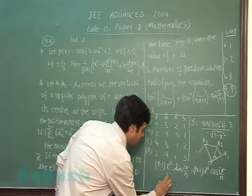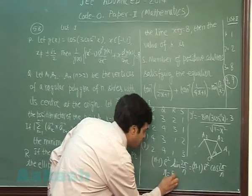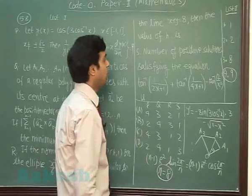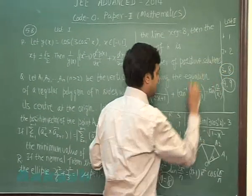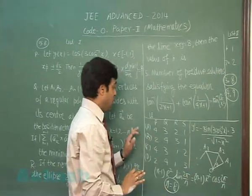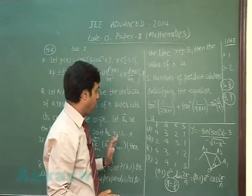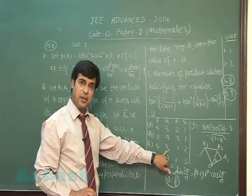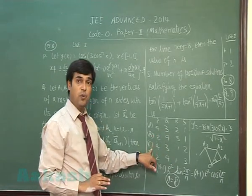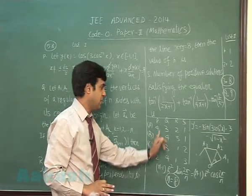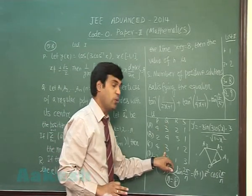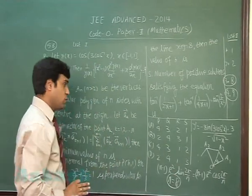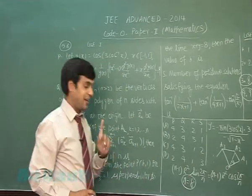tan(2π/n) = tan(π/4), which gives 2π/n = π/4, so n = 8. The correct code for this one is 3. Looking at the options (4, 3, 4, 3), solving for P gave 4 and Q gave 3, leaving two more to solve. Let's go to the next part.